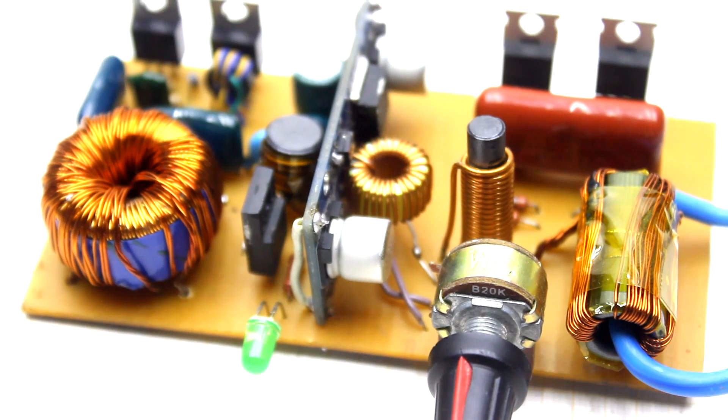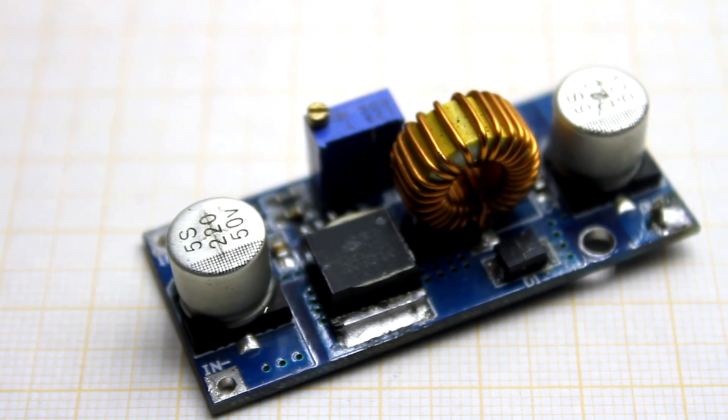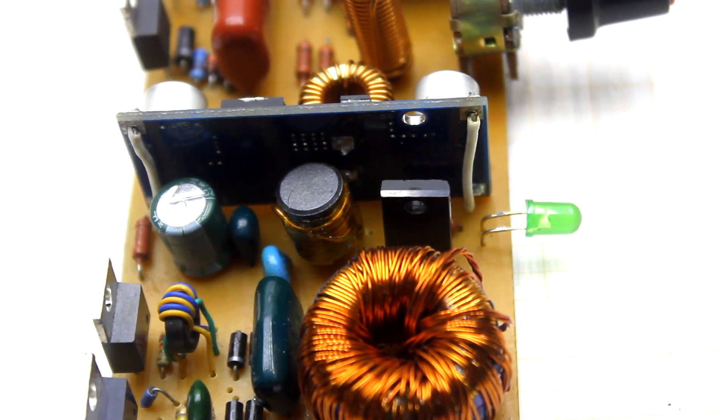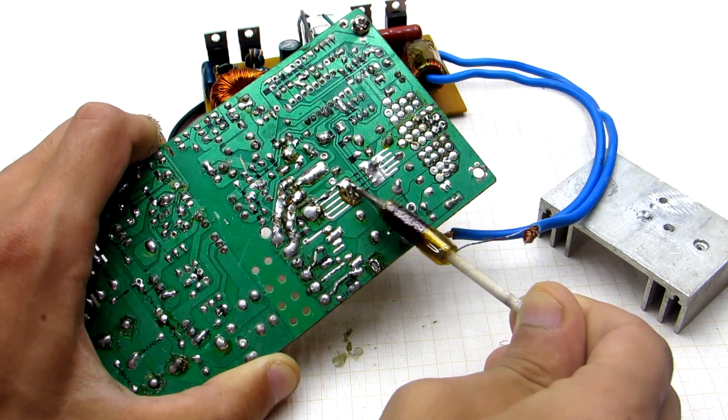The stabilizer board is designed for a current of 5 amperes. Actually, it doesn't give out so much, at least for a long time. But in our case, it requires a maximum of 2 amperes, so the stabilizer doesn't heat up during operation.